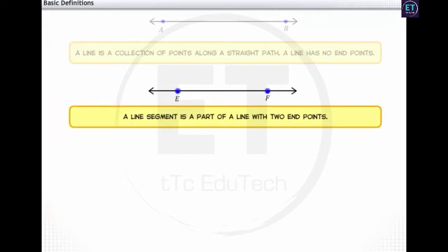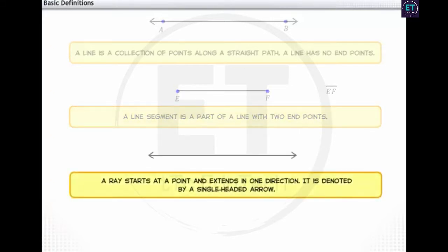A part of a line that has two endpoints is called a line segment. Let's name this line segment EF. It is denoted by a bar. And a part of line with one endpoint is called a ray. Let's name the ray PQ. It is denoted by a single headed arrow.